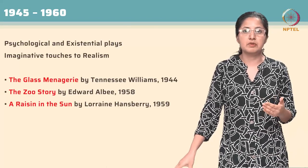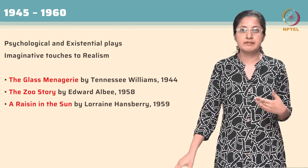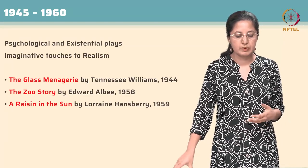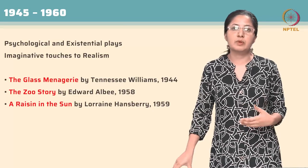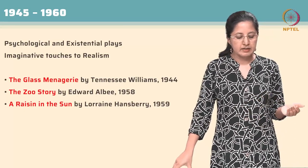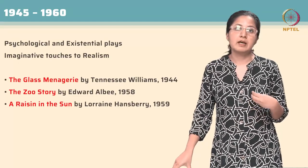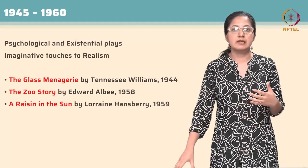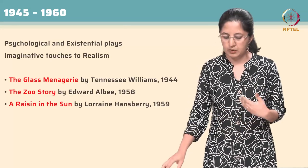In the following couple of decades — the 1940s and 50s — there is a lot of exploration into psychological and existential plays, manifest in representative works such as Tennessee Williams' Glass Menagerie, Zoo Story by Edward Albee, and A Raisin in the Sun by Lorraine Hansberry. In all of these works, imaginative touches are added to realism, and American theatre functions almost as a mirror held out to society. Glass Menagerie is a memory play, and in Zoo Story and Raisin in the Sun, the psychological turmoil of the individual gets mapped onto larger socio-historical realities, providing a platform to critique how individuals negotiate within families, with society, and with the larger dreams of the nation.